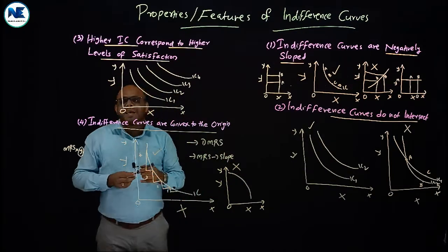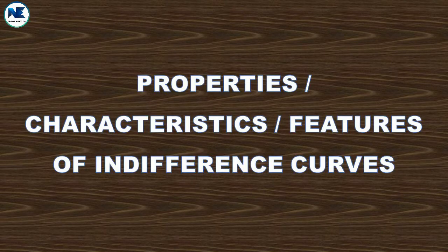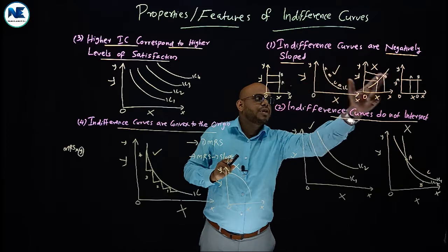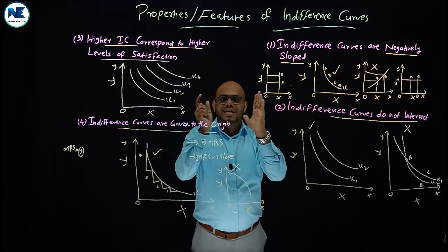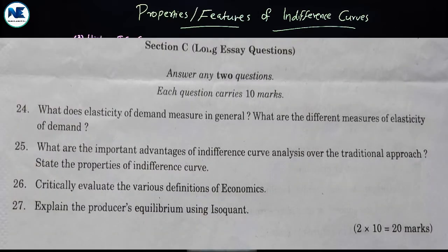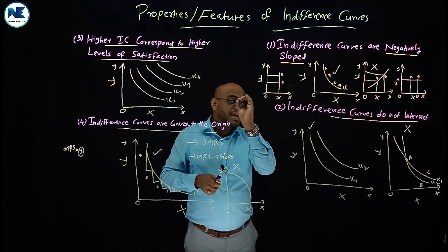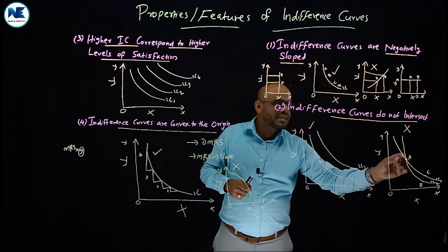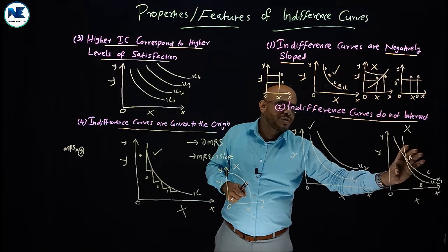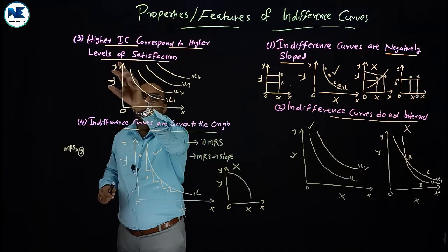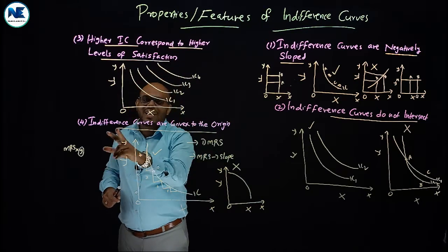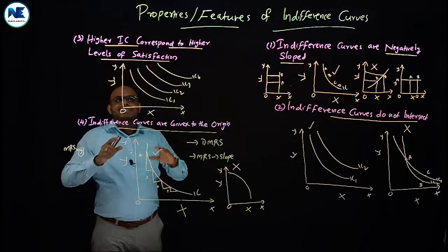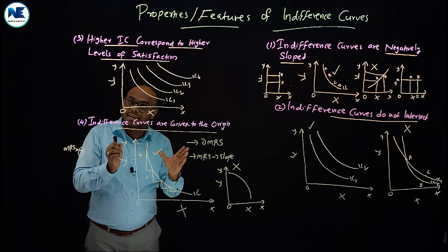These are the four properties: indifference curves are negatively sloped; indifference curves do not intersect; a higher indifference curve corresponds to higher levels of satisfaction — refer to the indifference map; and indifference curves are convex to the origin because of diminishing marginal rate of substitution. Whether the question asks for properties, features, or characteristics of the indifference curve, the answer is the same.